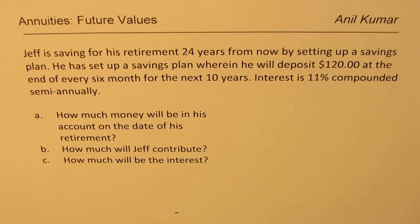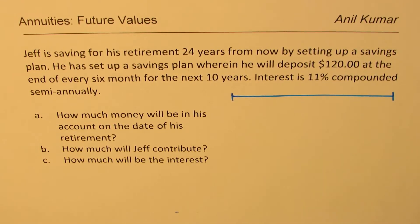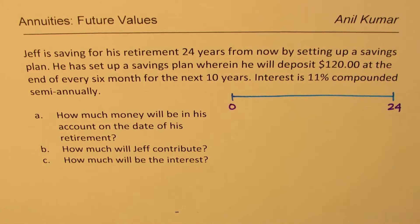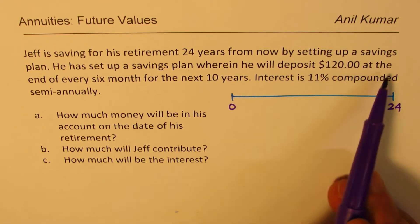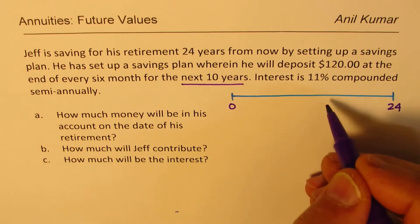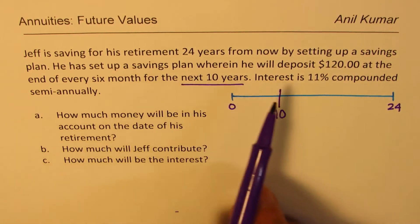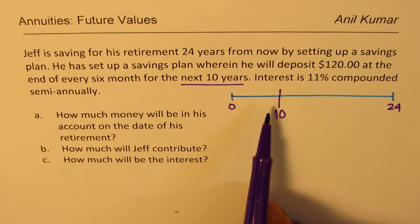This is a very practical question. Jeff is saving for retirement 24 years from now, but he deposits $120 at the end of every 6 months for only the next 10 years — not all 24 years. So deposits happen over the first 10 years. Interest is 11% compounded semi-annually, meaning the rate per period is 11 divided by 200, which is 0.055.